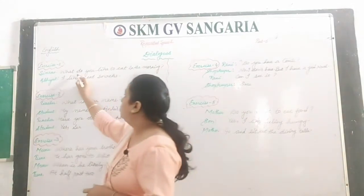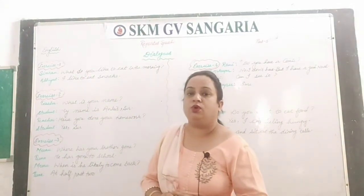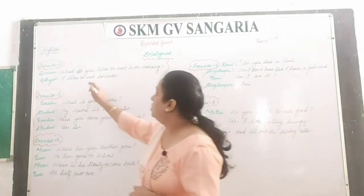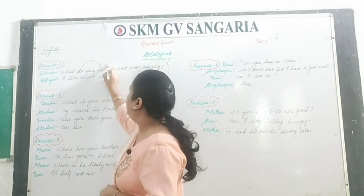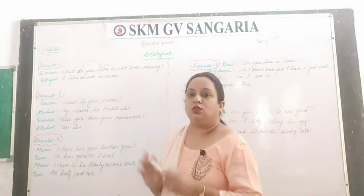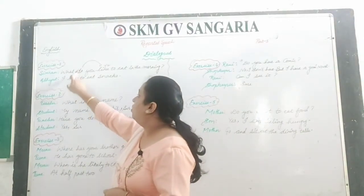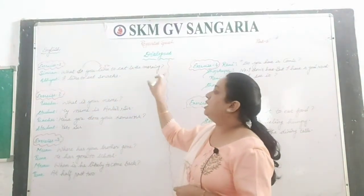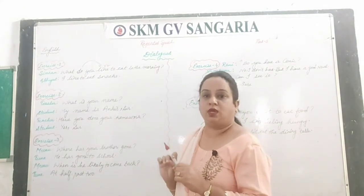Because 'do' is there, and 'do' cannot be changed into 'did'. Instead, you change it with the second form of the verb. So that would be 'liked'. The answer would be: Simran asked Abhijit what he liked to eat in the morning. Full stop.